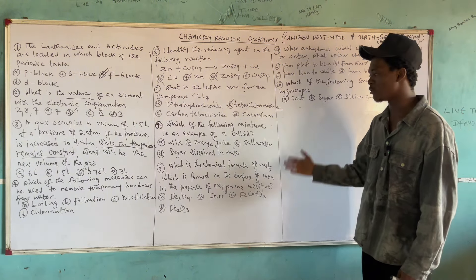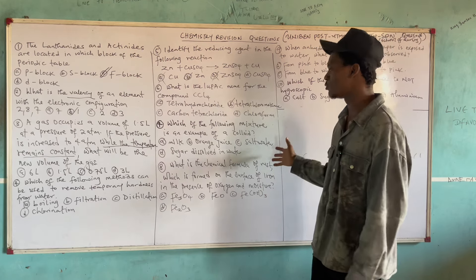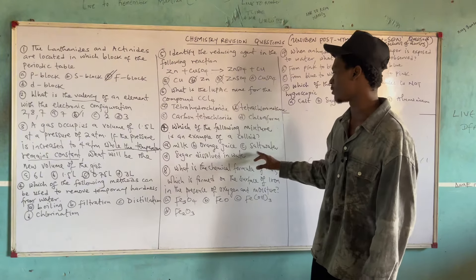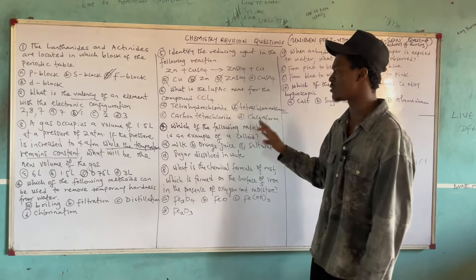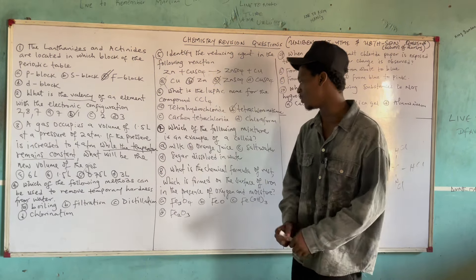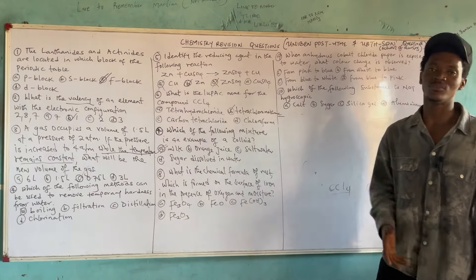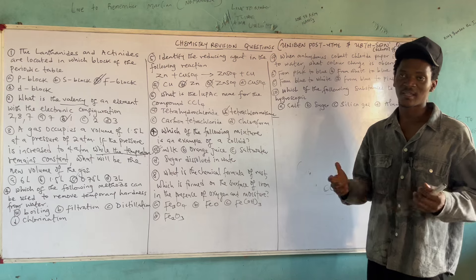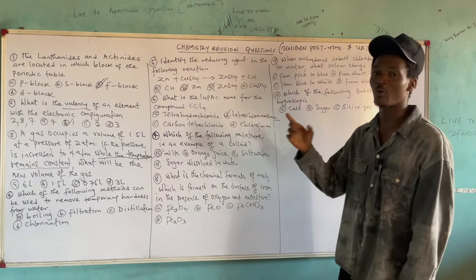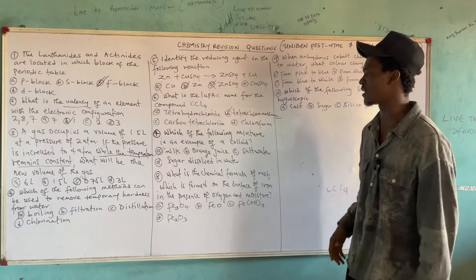Question 7: Which of the following mixtures is an example of a colloid? A colloid is a false solution. The three true solutions given are orange juice, salt water, and sugar solution. The only option that makes sense as a colloid is milk. Milk falls under emulsions, which are an example of a colloid — specifically liquid dispersed in liquid. You can watch previous videos on this channel for more on colloids.